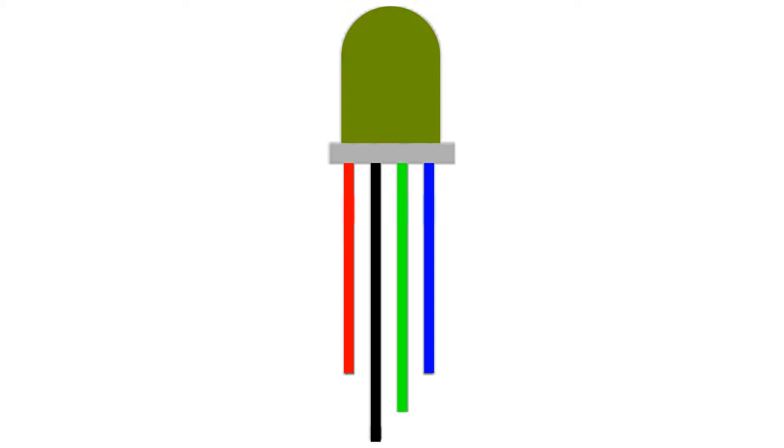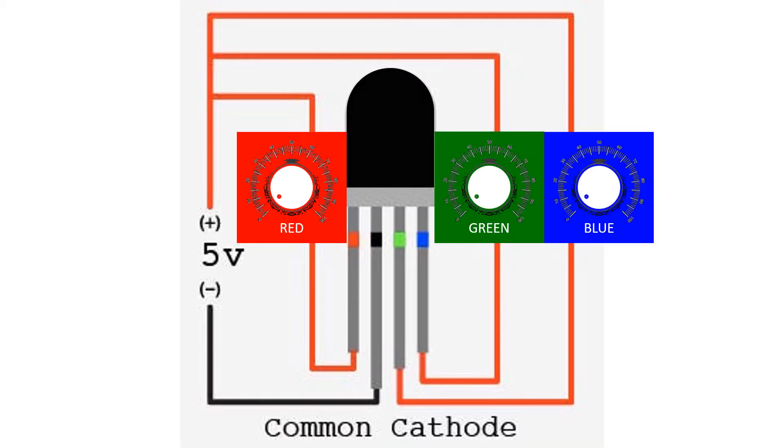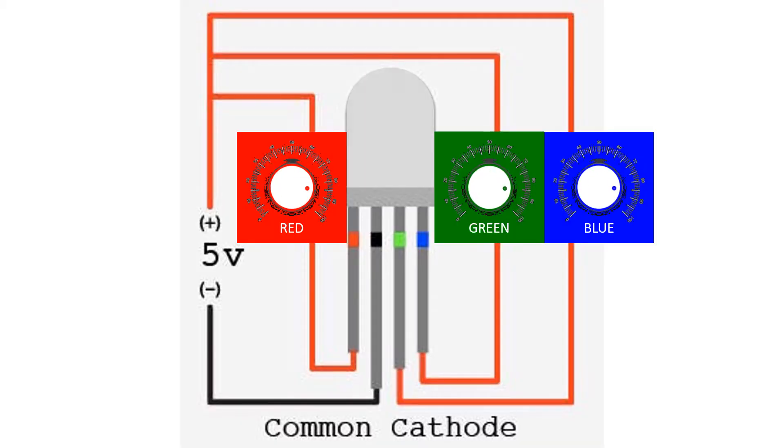The three pins individually show the colors red, green, and blue. Together, these three colors form the color white.